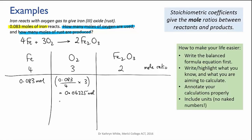And we should think about significant figures. The stoichiometric coefficients are exact numbers, so they effectively have infinite sig figs. But we started with 0.083 moles of iron, which has only two sig figs. So our final answer should be rounded to 0.062 moles of oxygen.